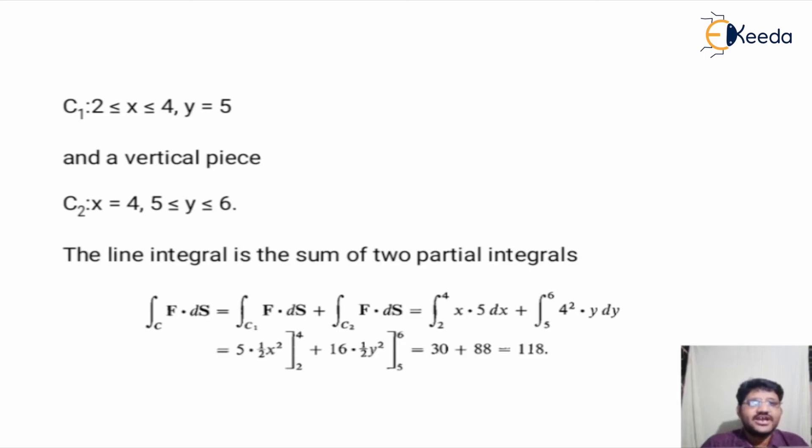Suppose there are two pieces C1 and C2, and their xy coordinates are—for C1: 2 ≤ x ≤ 4, y = 5, and for vertical piece C2: x = 4, 5 ≤ y ≤ 6. Then, after putting the values of C1 and C2 in the previous function, we get the final result f = 118.